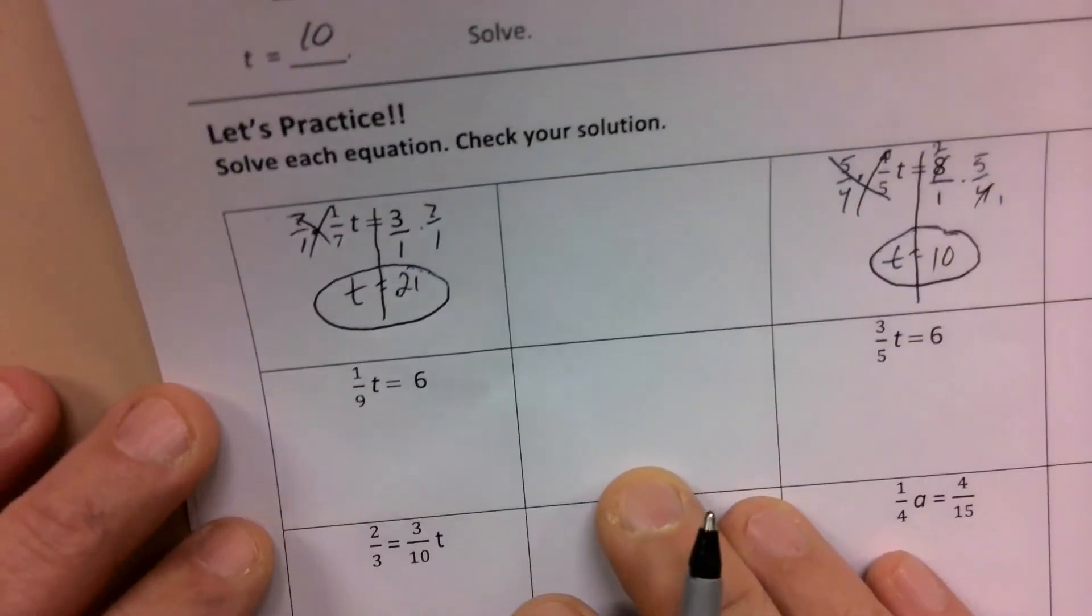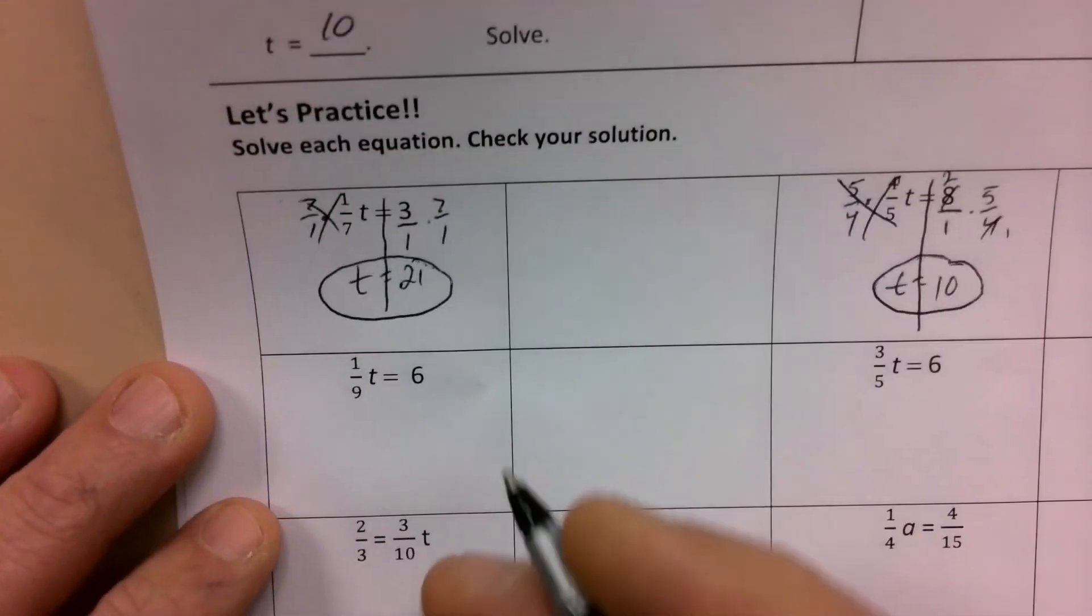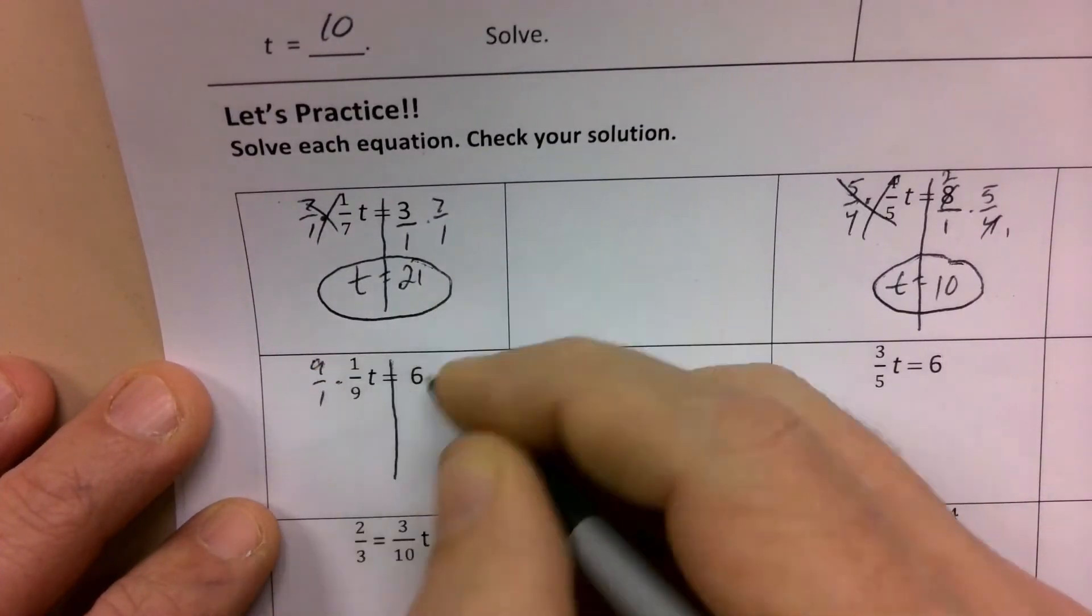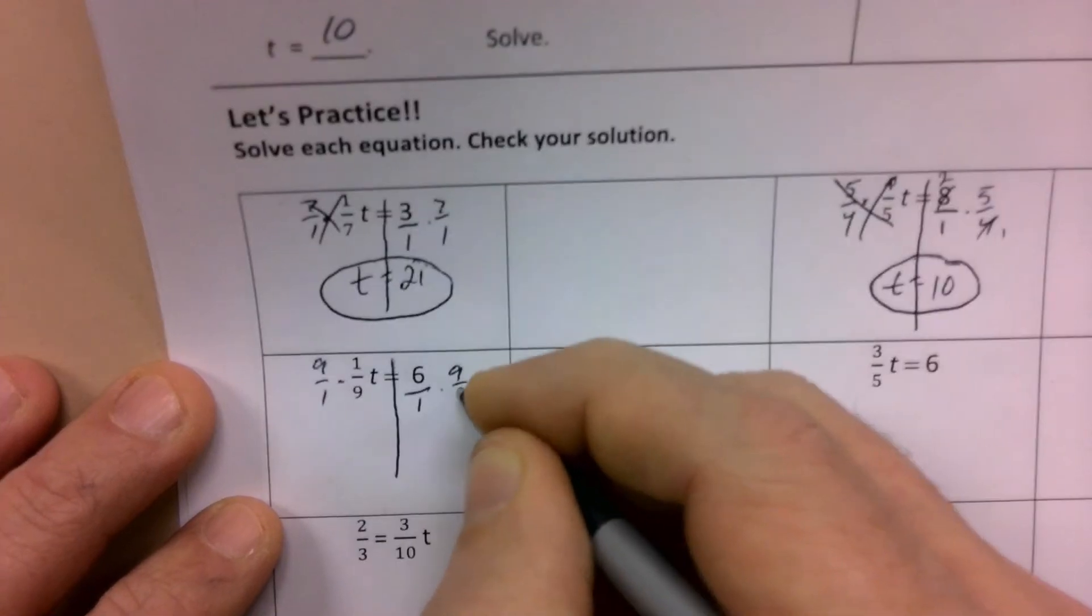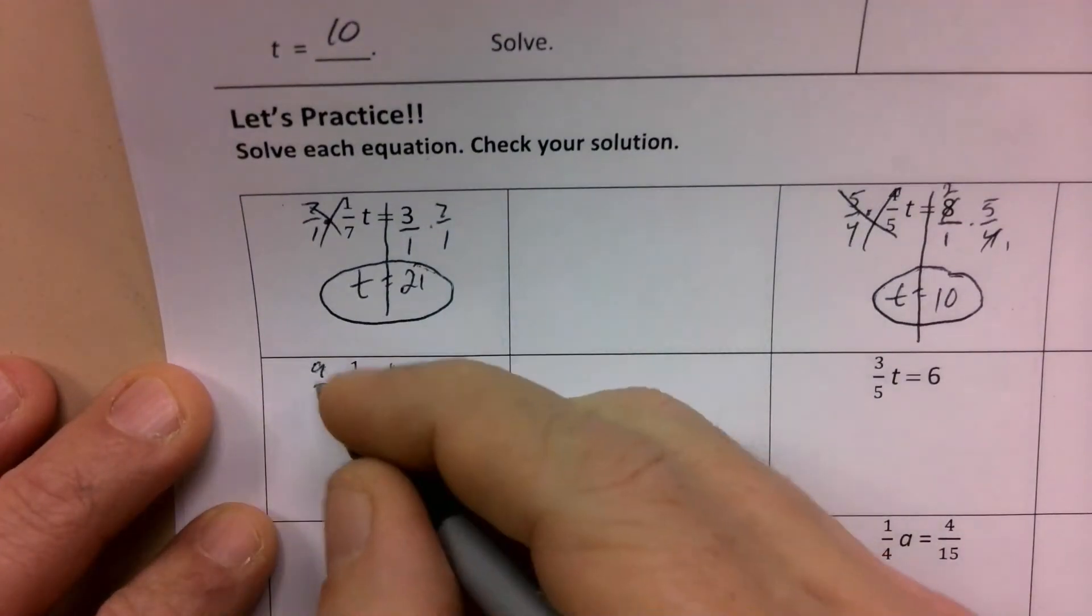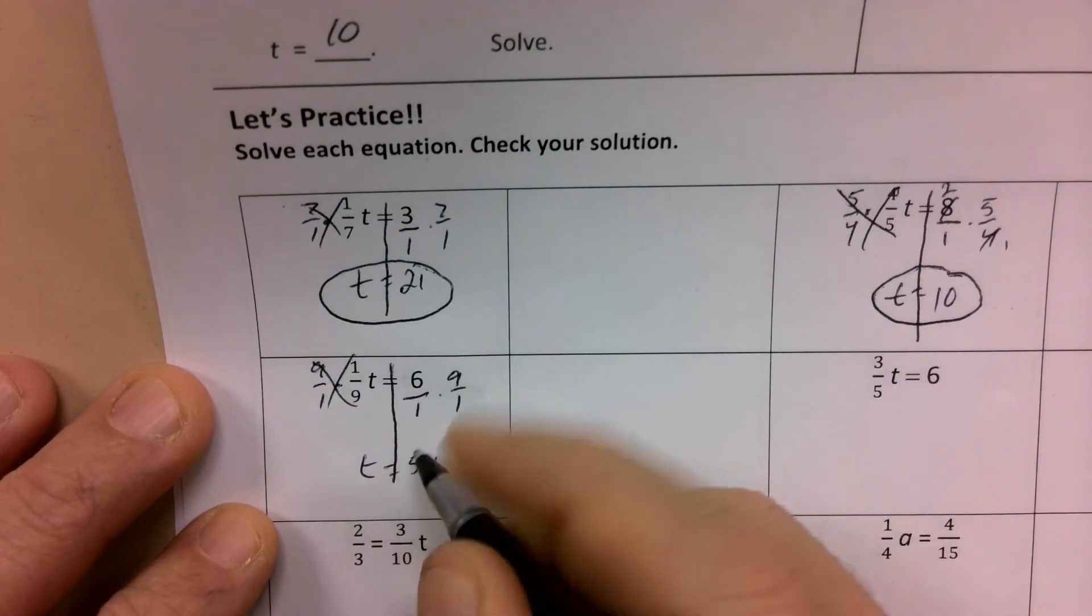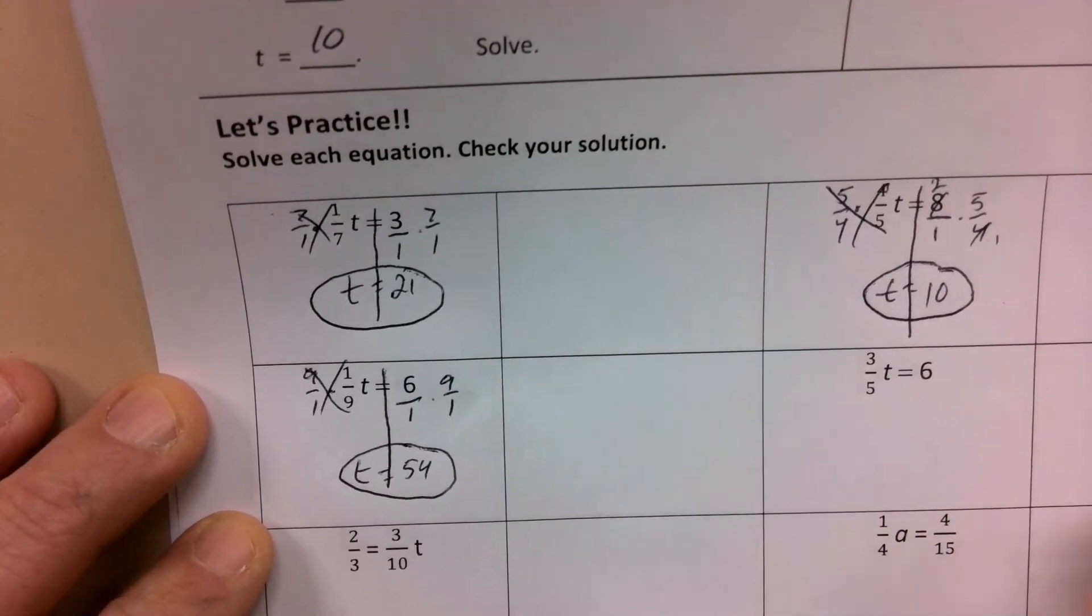One ninth of what number? Is six. Okay. Times nine over one. Six over one times nine over one. Just a basic multiplication problem right there. Cancel them out. T is equal to fifty four. Okay. Next one.